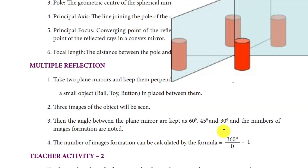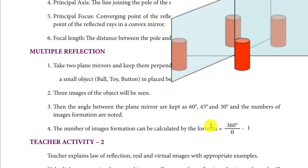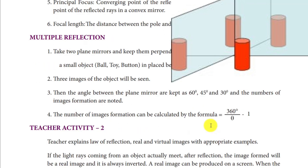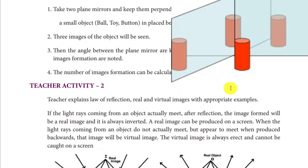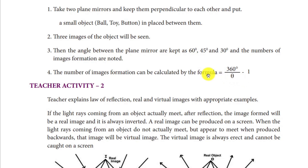We can calculate the number of images using the formula: 360 degrees divided by the angle theta, minus 1. Using this formula, we can calculate the number of images formed.